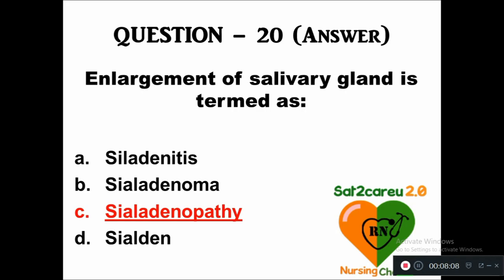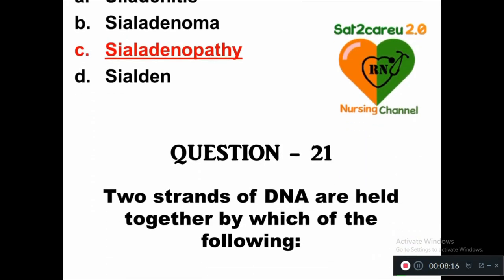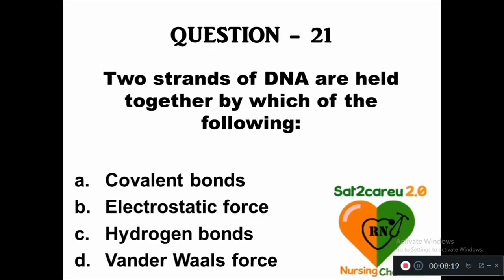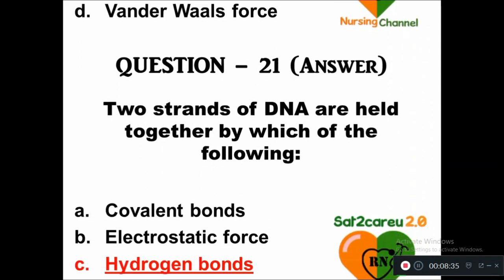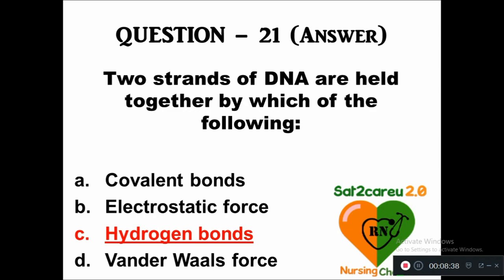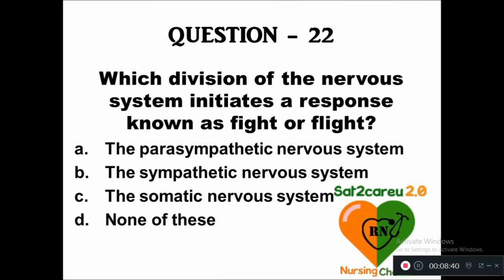Note: sialoadenopathy is enlargement, not inflammation — inflammation would be sialoadenitis. Question 21: Two strands of DNA are held together by which of the following — option A: covalent bond, B: electrostatic force, C: hydrogen bond, D: van der Waals force. Two strands of DNA are held together by hydrogen bonds.